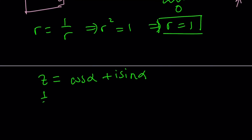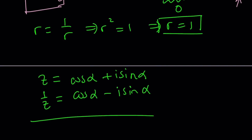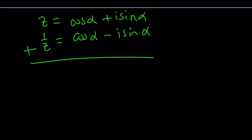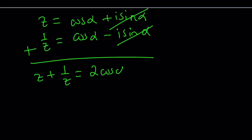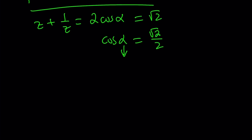With r equals 1, 1 over z becomes cosine alpha minus i sine alpha. Adding z and 1 over z, the imaginary parts cancel and we get 2 cosine alpha. But we know z plus 1 over z equals square root of 2, so cosine alpha equals square root of 2 over 2. The smallest positive angle satisfying this is pi over 4.